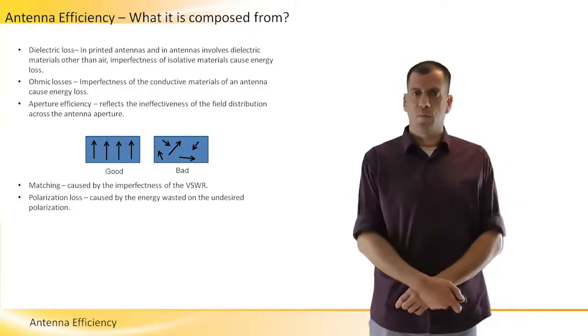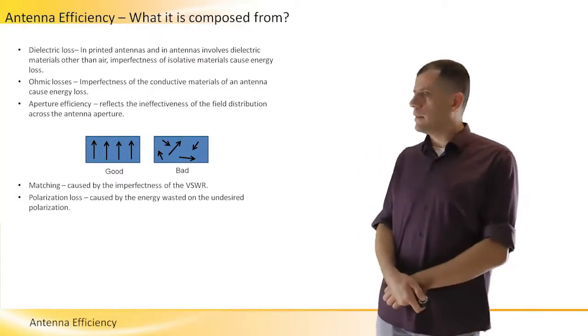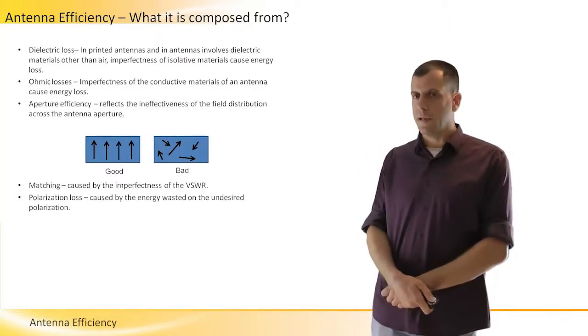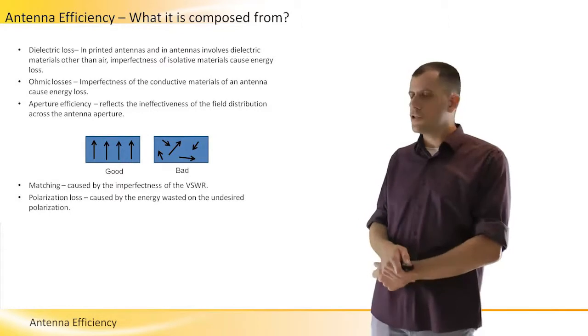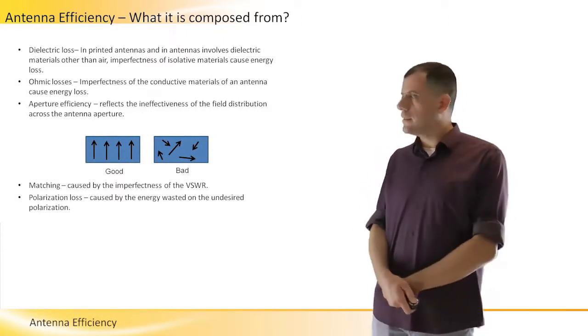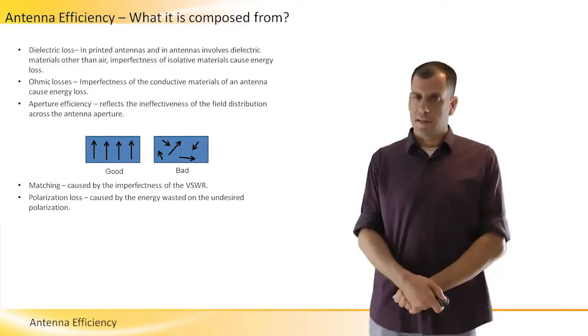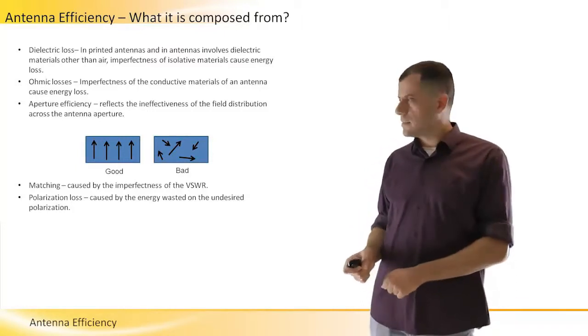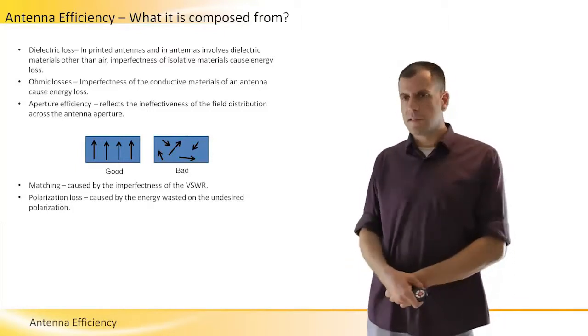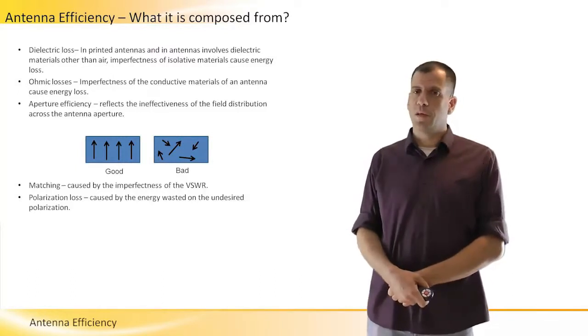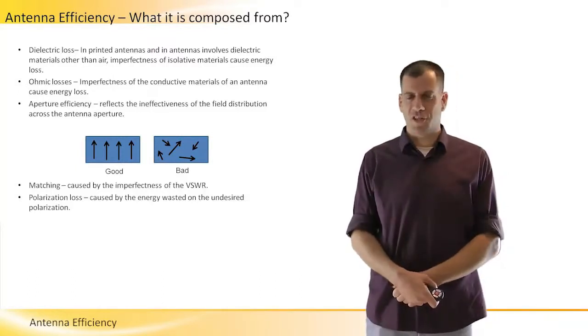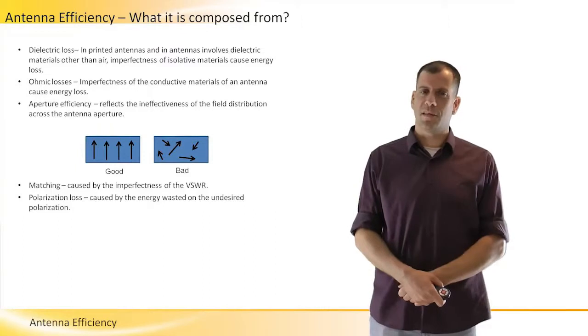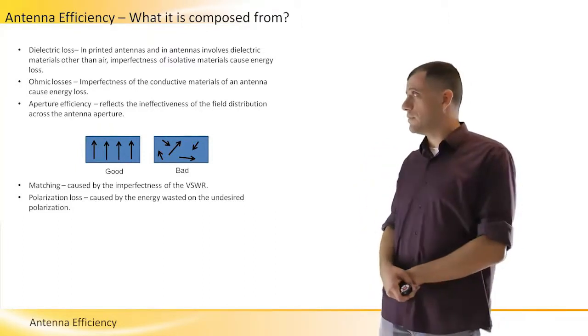This impedance, comparing to the impedance of the transmission line that we injected the energy to the antenna, are a little bit different. These different impedances cause the VSWR. That's why we use the term matching. Match between the impedance of the transmission line to the impedance of the antenna.